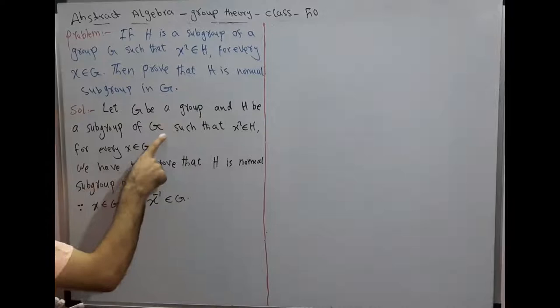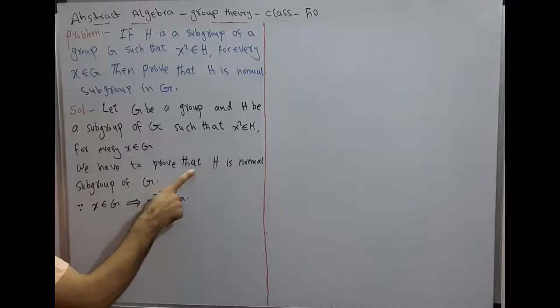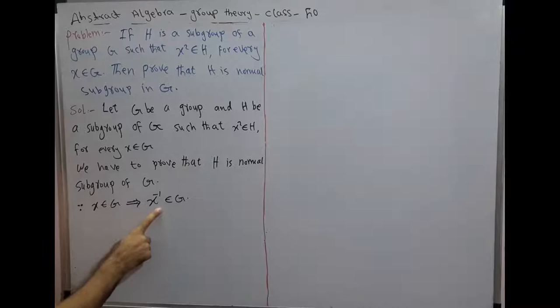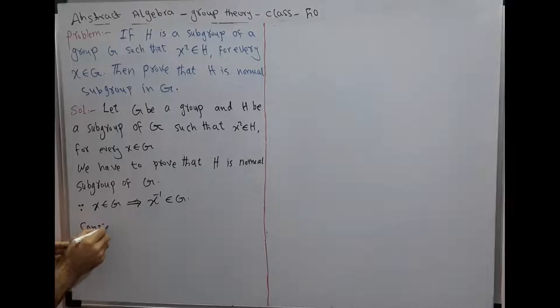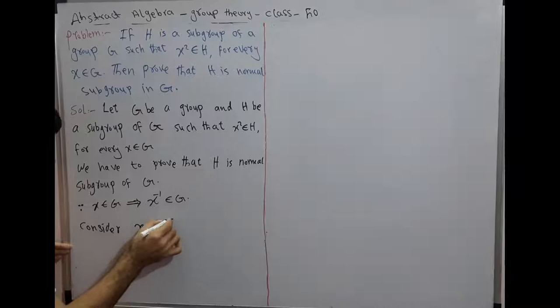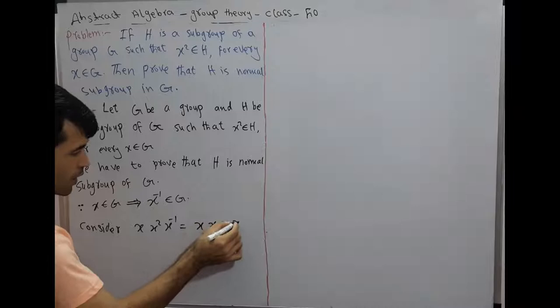We have to prove that H is a normal subgroup of G. Since x belongs to G, this implies x inverse also belongs to G. Consider the expression x times x squared times x inverse.